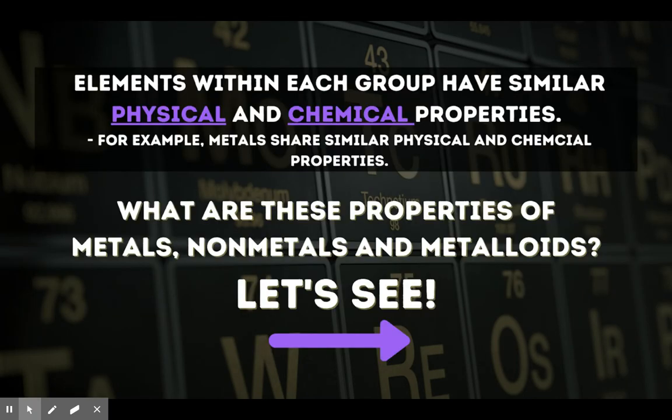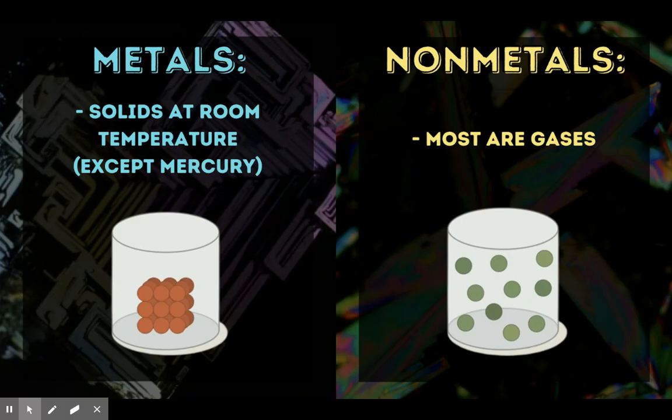Elements within each group have the same physical and chemical properties. For example, most metals share similar physical and chemical properties. So what are those properties of metals, nonmetals, and metalloids? Let's see, starting with metals and nonmetals.